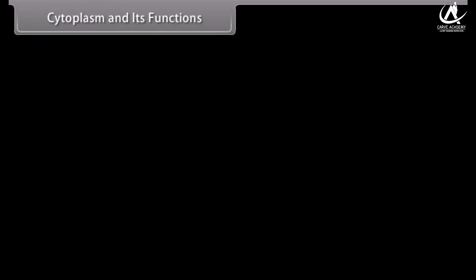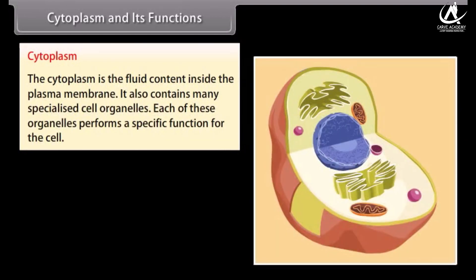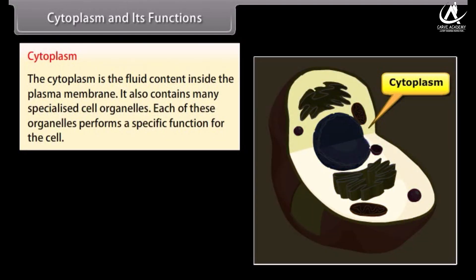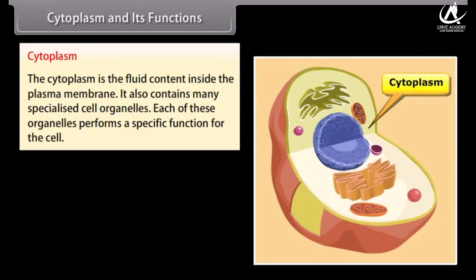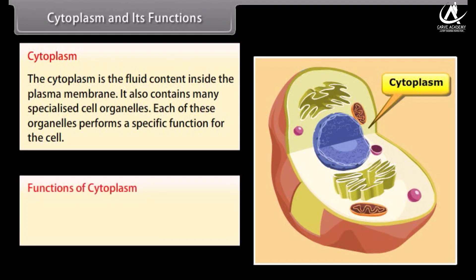Cytoplasm and its functions: The cytoplasm is the fluid content inside the plasma membrane. It also contains many specialized cell organelles, each of which performs a specific function for the cell. All cell organelles are embedded in the cytoplasm.